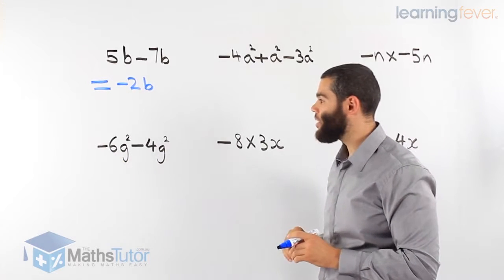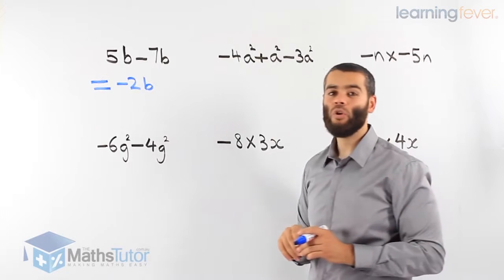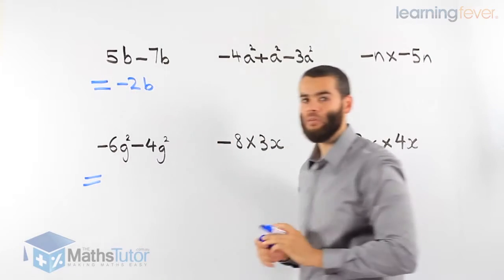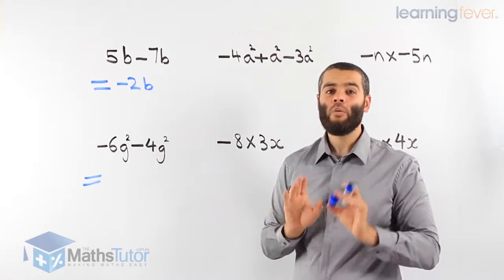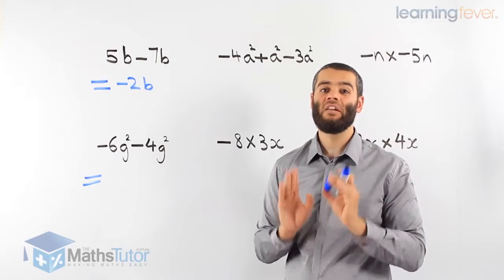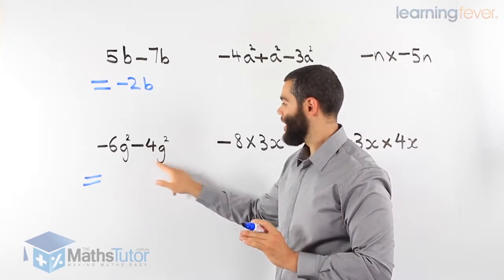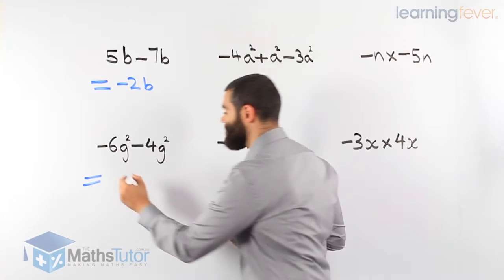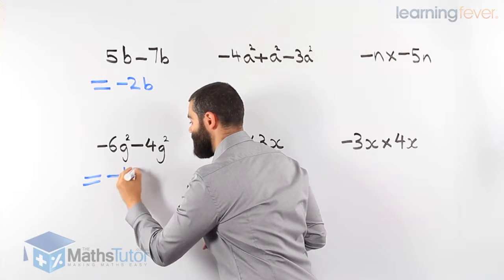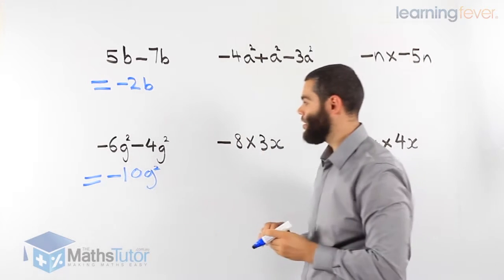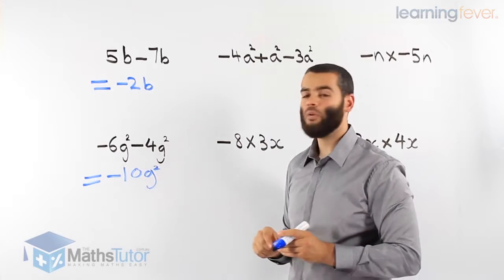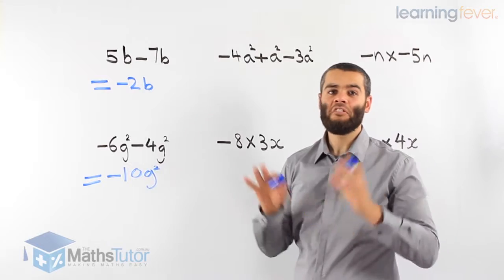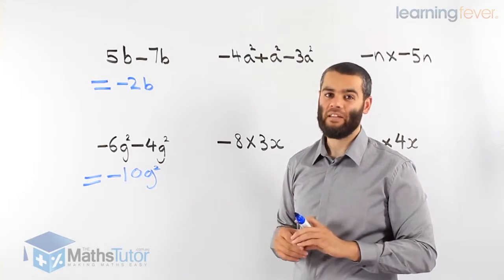Negative 6g squared minus 4g squared. Can we do this question? Are they like terms — g squared and g squared? We said we can only add or subtract like terms — very important. Well, they are like terms. Negative 6 minus 4 gives minus 10g squared. The like terms are g squared and g squared. Minus 6 minus 4 is minus 10g squared — just like normal numbers, except we have negatives.